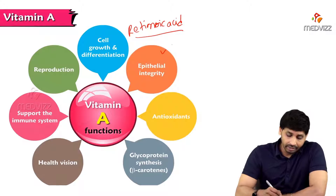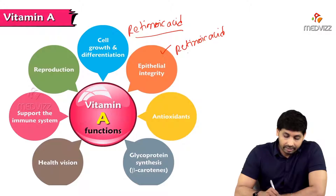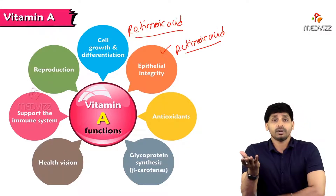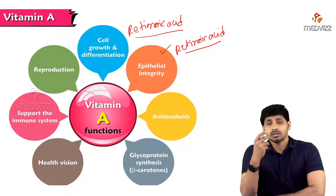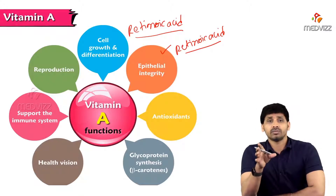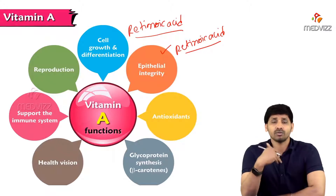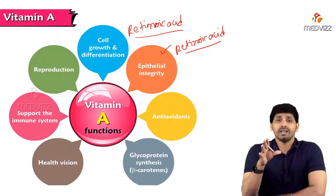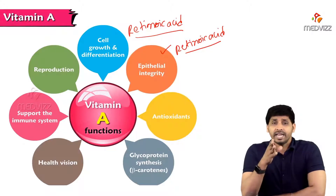Epithelial integrity is also maintained by retinoic acid. Epithelial integrity means the epithelium — our skin is made up of epithelium, our intestinal tract, GIT, everything is made up of epithelium. For smooth and healthy skin or esophagus or GIT, there should be healthy epithelium. For making this healthy epithelium, vitamin A is required.